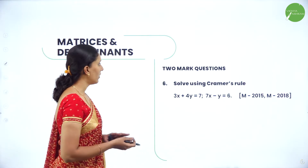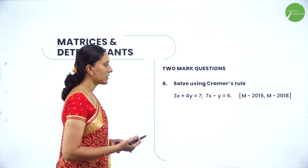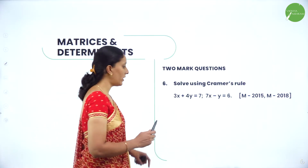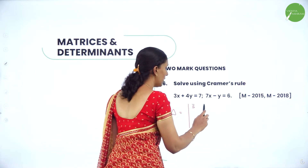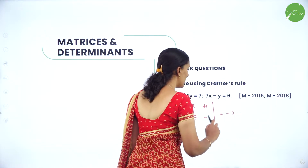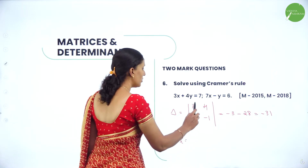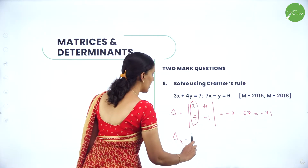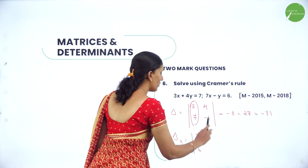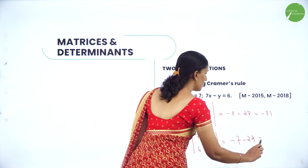Next, solve using Cramer's rule: 3x + 4y = 7 and 7x - y = 6. Write the coefficients of x and y as determinant Δ = [3, 4; 7, -1]. So Δ = 3×(-1) minus 7×4 = -3 - 28 = -31. For Δx, replace the x-coefficients with the constants: Δx = [7, 4; 6, -1] = -7 - 24 = -31.